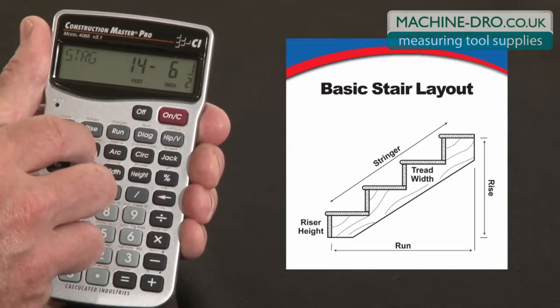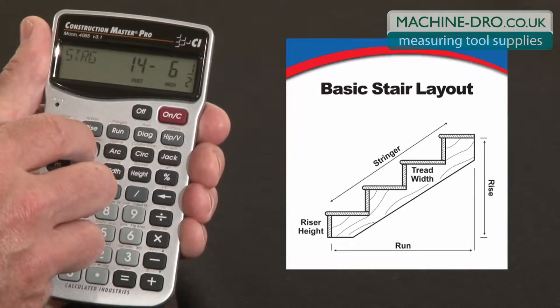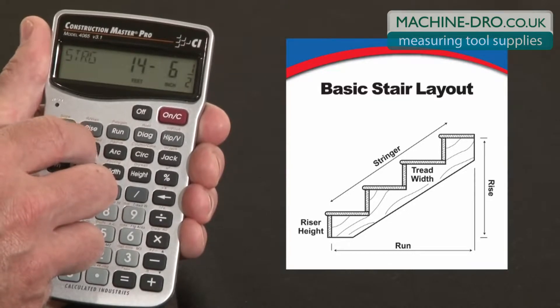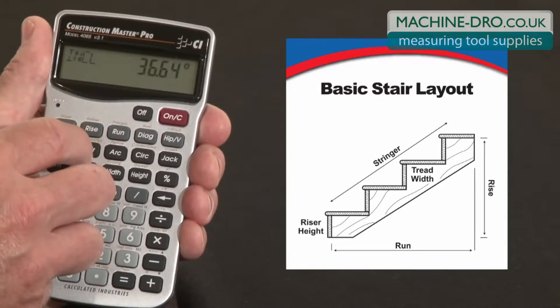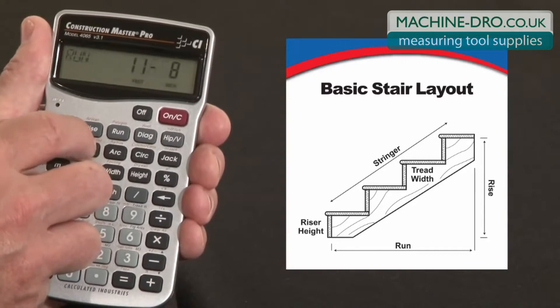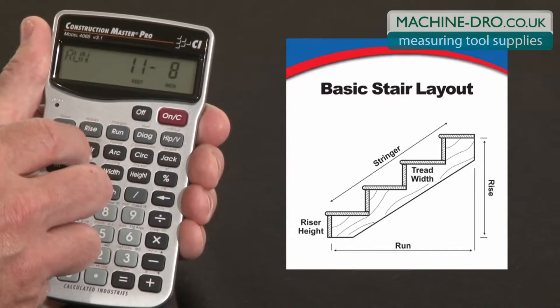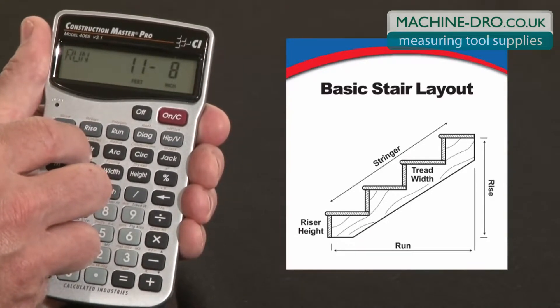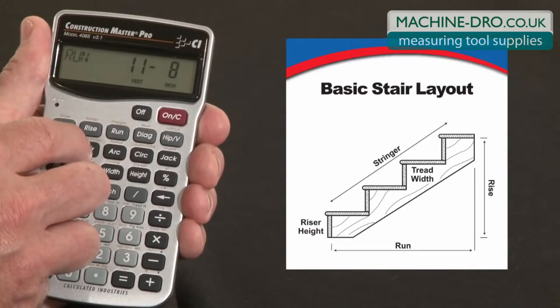The next press gives us a stringer length of 14 feet 6 and a half inches and the angle of incline. The final press gives us the total run of the stairway, which is 11 foot 8 inches — that would probably work in this situation.